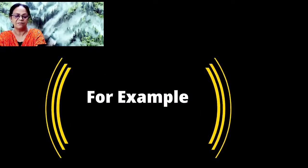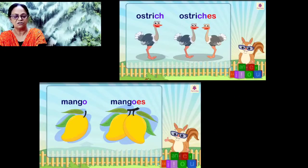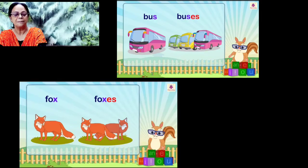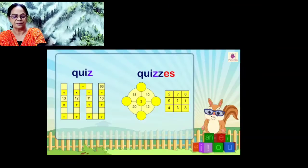For example: ostrich becomes ostriches, mango becomes mangoes, bus becomes buses, fox becomes foxes, quiz becomes quizzes.